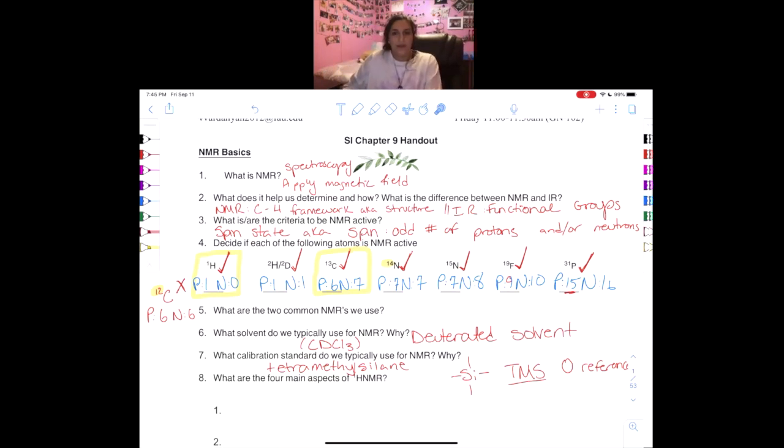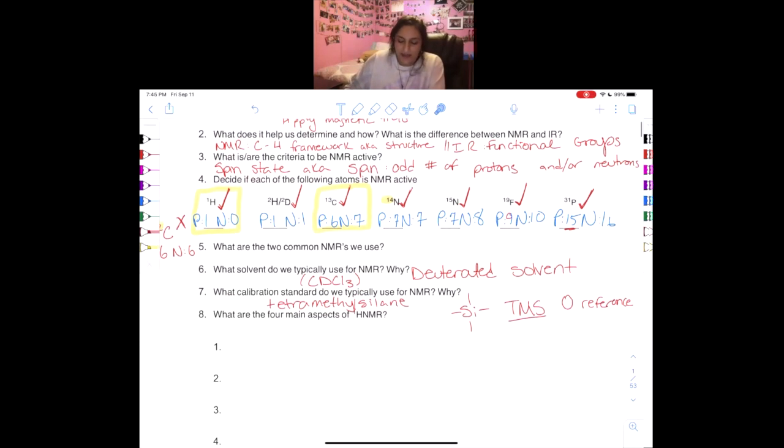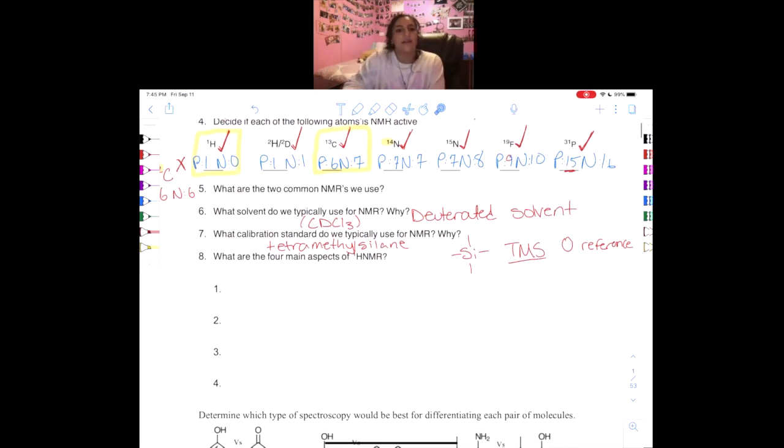Next up, we have the four main aspects of NMR, and a lot of students tend to mix these up a little bit. The order I'm writing them in actually is not super important. What's important is that you know all the concepts. So number one is going to be the number of signals, and usually if you're looking at a spectrum this is the easiest thing to find because you're literally just looking for the number of unique - unique is important, so underline it - environments. And this is synonymous with signals.